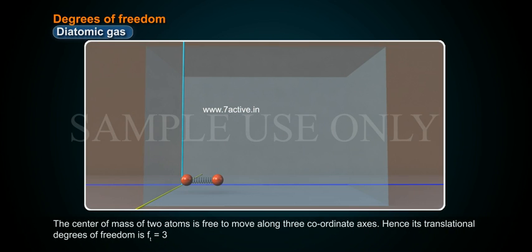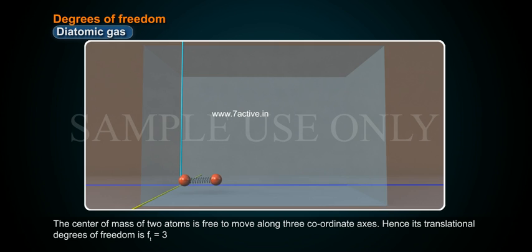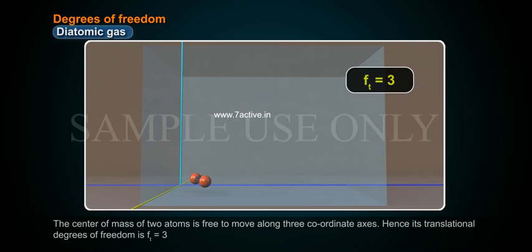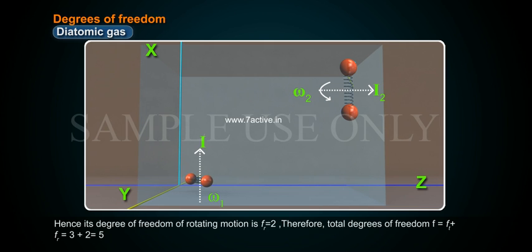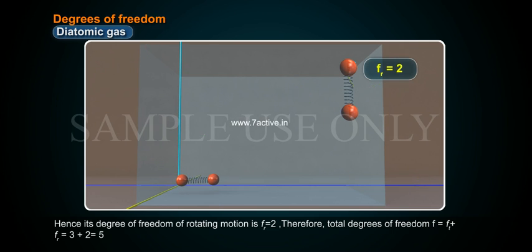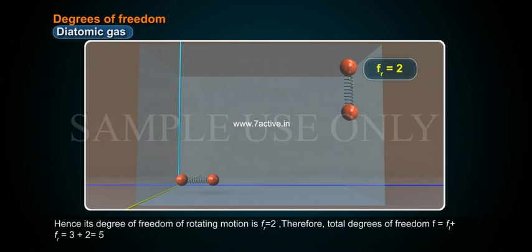Diatomic gas: The center of mass of two atoms is free to move along three coordinate axes, hence its translational degrees of freedom Ft equals 3. The molecules can rotate about a perpendicular axis passing through their center of mass in two directions, hence its rotational degrees of freedom Fr equals 2. Therefore, total degrees of freedom F equals Ft plus Fr equals 3 plus 2 equals 5.